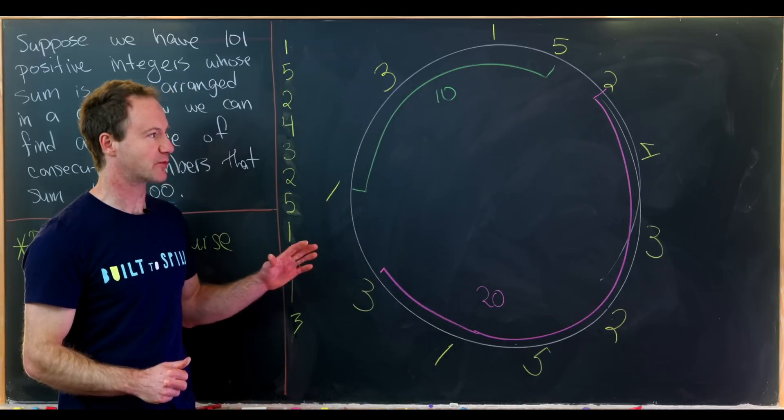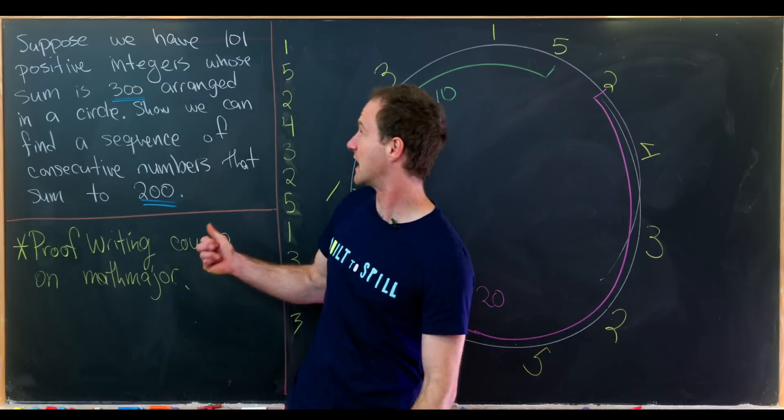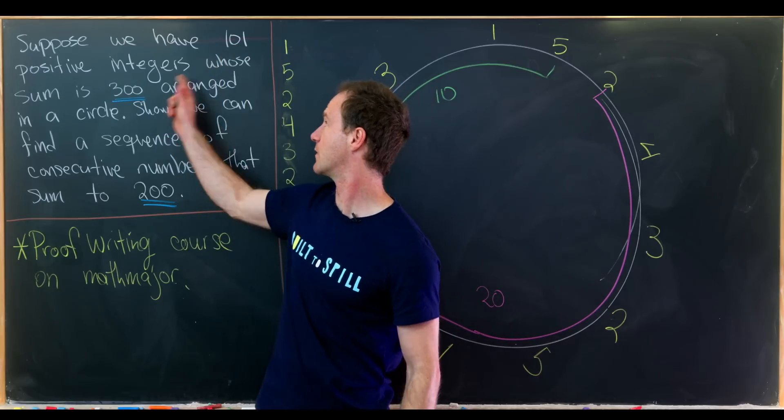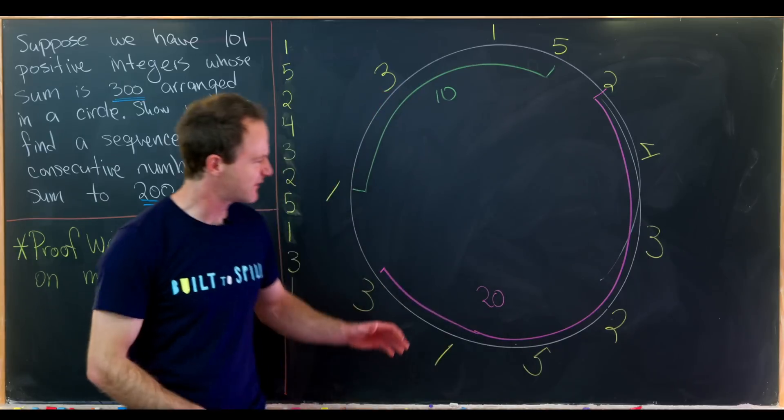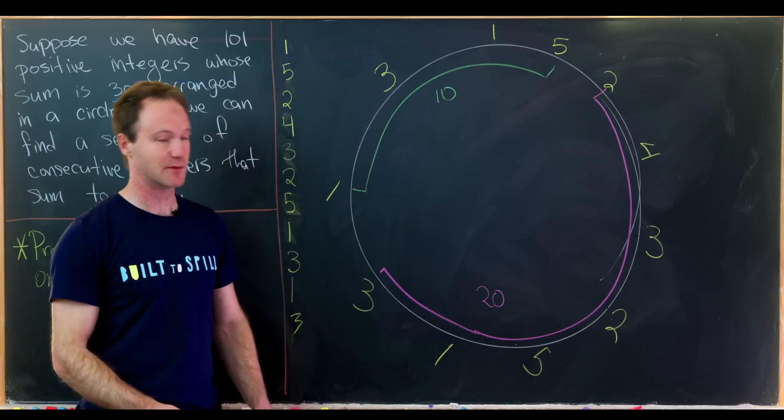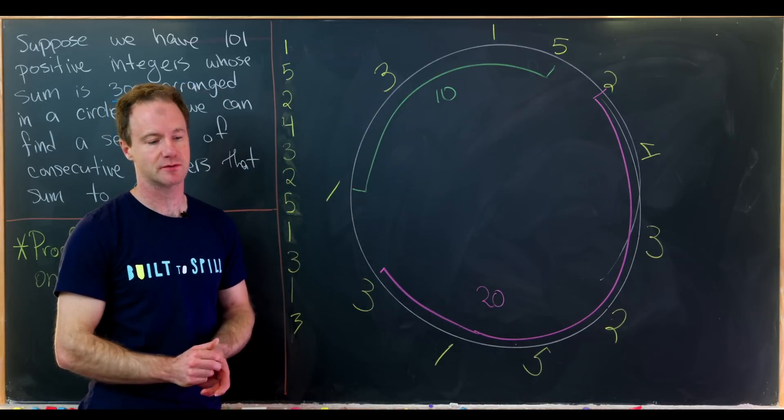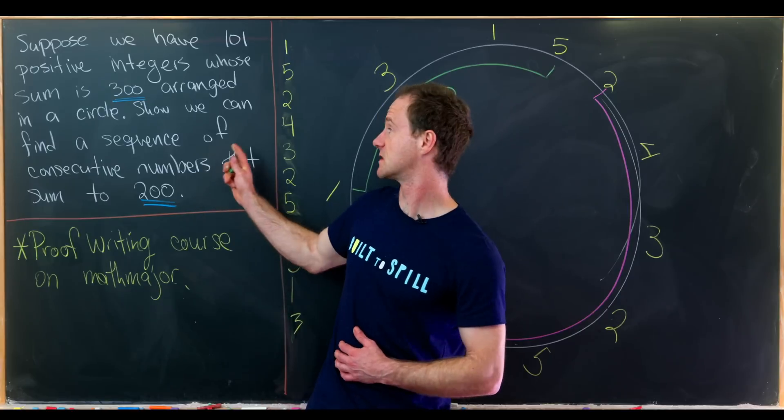So I'd just like to point out that we haven't proven the simplified case where we replace this with 11, this with 300, and this with 20. But we've kind of indicated by an example why it seems like it might be true. Now let's jump into this larger proof.